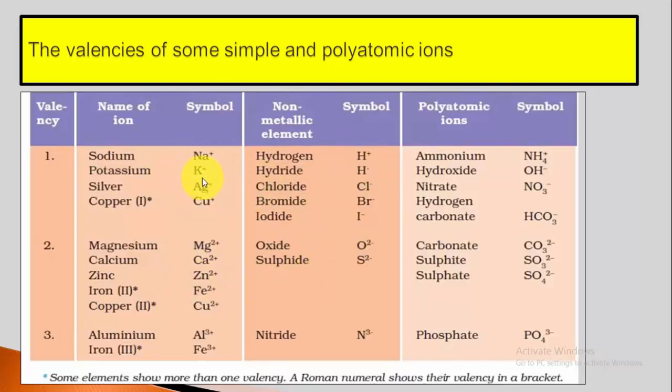This table is given in NCERT. You should go through the symbols plus go through the various valencies. Here iron is given with this symbol. Similarly, non-metallic elements. Hydrogen, chloride, bromide, iodide. Then polyatomic like ammonium. The polyatomic, we have already studied that there are groups of atoms, multiple atoms, which are charged as a group. NH4 positive, this group has the charge. They are known as polyatomic ions. Go through this table. This will be very helpful to derive various chemical formulas.